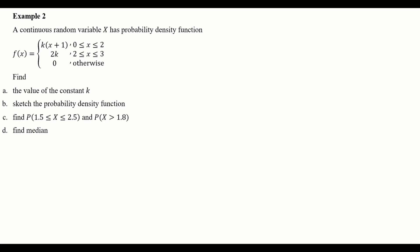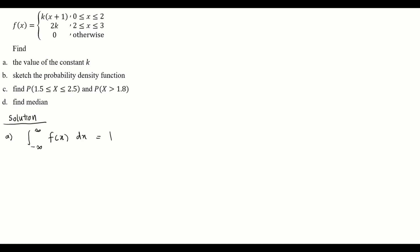To find the value of k, we use the property of the probability density function (PDF): if we integrate from negative infinity to infinity, the function f must equal 1. Because this is a PDF, we can use this condition to find the value of k.